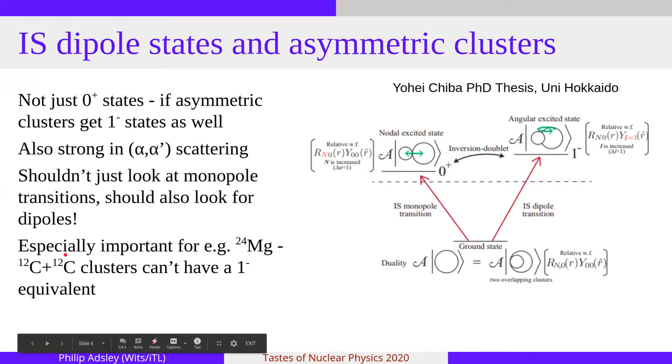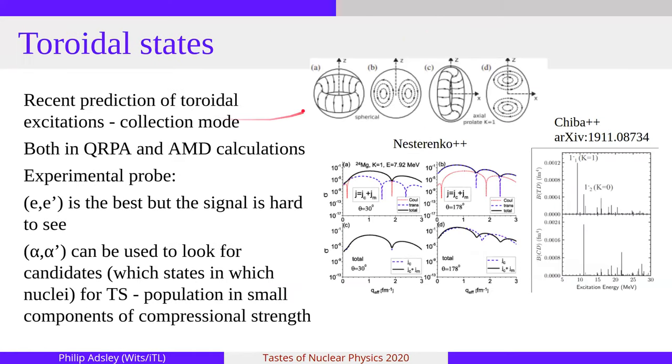And so, when we look at, say, alpha particle scattering, which should populate these isoscalar transitions strongly, we should look at the monopole transitions to the zero-plus states, the lowest states of the cluster bands. But we should also look at the dipole states, which go to the asymmetric structures. And this is especially important for systems like magnesium-24, where carbon-12, carbon-12 clusters are symmetric. So, for some clusters, there shouldn't be a parity partner. There should just be a single monopole state and the band built on that.